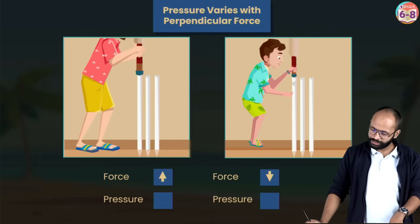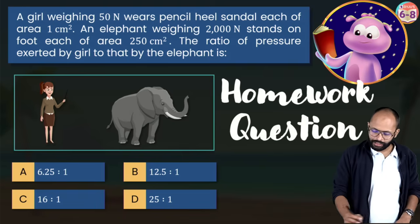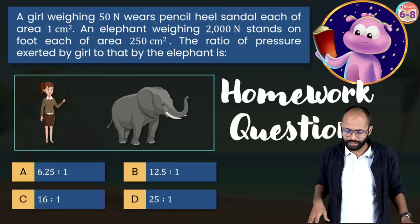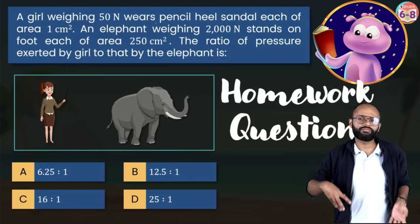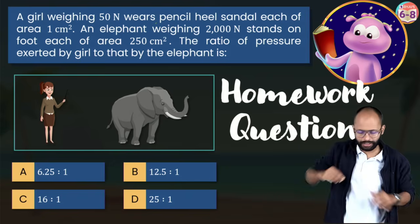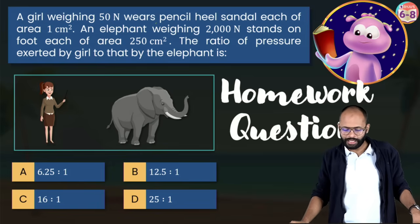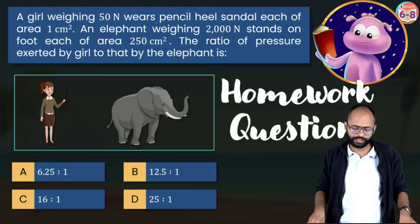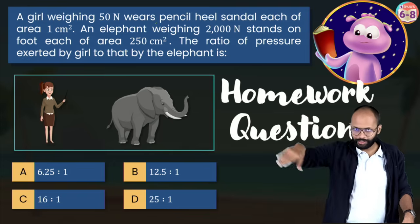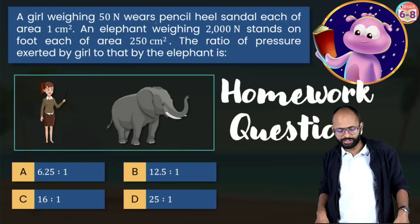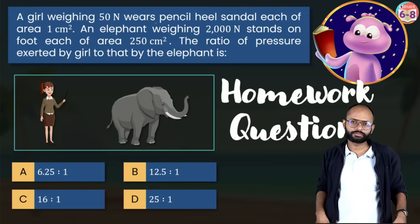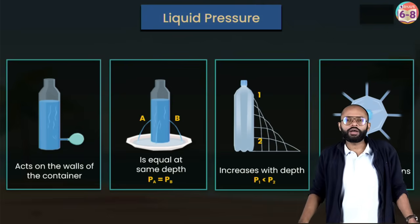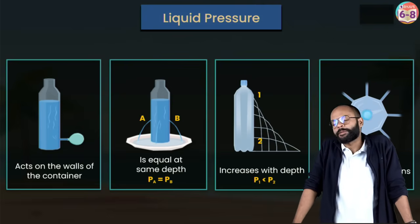Homework question: A girl weighing 15 N wears pencil-heel sandals, each heel having an area of 1 cm². An elephant weighing 2000 N stands on one foot of area 250 cm². What is the ratio of pressure exerted by the girl to that by the elephant? Answer in the comment section.